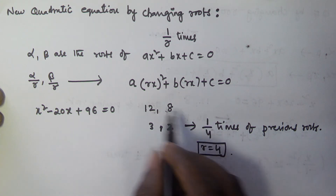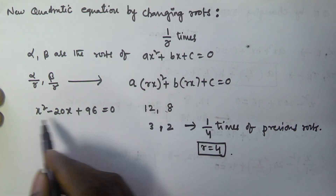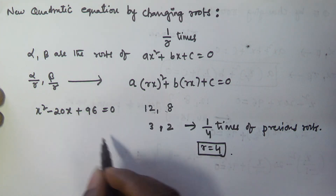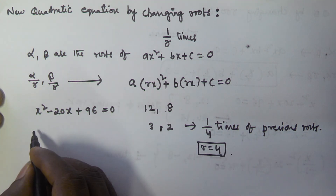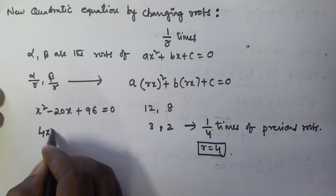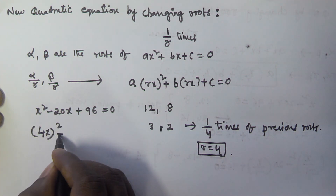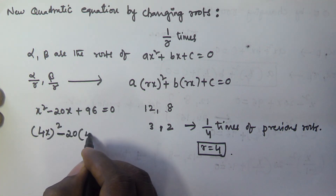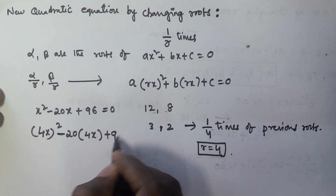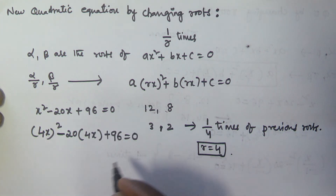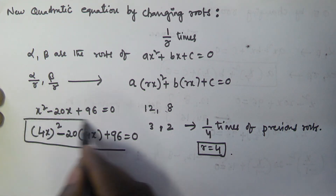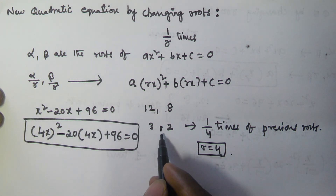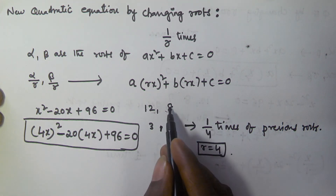We substitute this r value in the equation. Here we have A, B, C values, and instead of x we substitute 4x. So the equation becomes 4x squared minus 20 times 4x plus 96 equals zero. The roots of this equation are 3 and 2, which are 1 by 4 times of the previous roots.